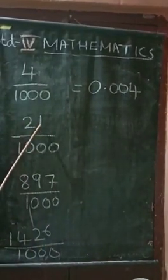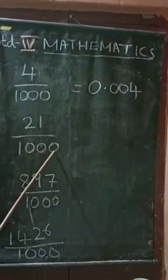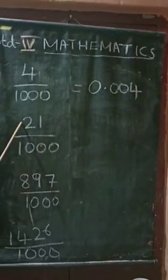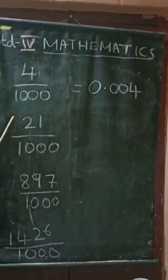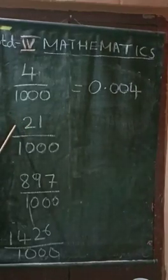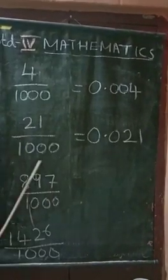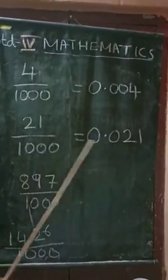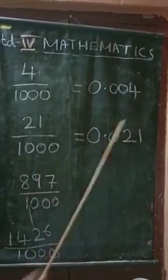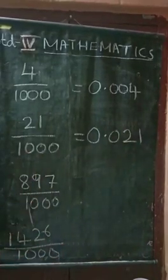Next, 21 by 1000. Here how many digits? 1, 2 — two digits. We need three digits, so put a 0 before 21. So, 21 by 1000 equals 0.021. After the decimal, 1, 2, 3 digits.